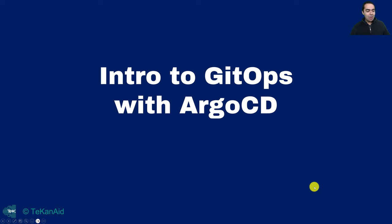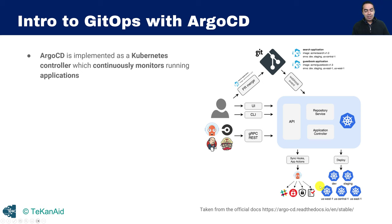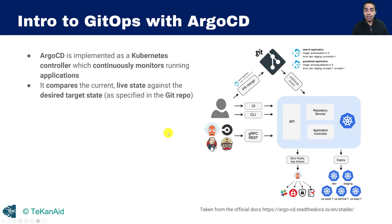Introduction to GitOps with Argo CD. If you're not familiar with GitOps, it's the process of having your application code and infrastructure code all stored in Git. Basically, Git becomes your source of truth and you deploy straight from Git. Argo CD is a tool that implements GitOps principles, implemented as a Kubernetes controller that continuously monitors running applications and compares the current live state against the desired target state as specified inside your Git repo.